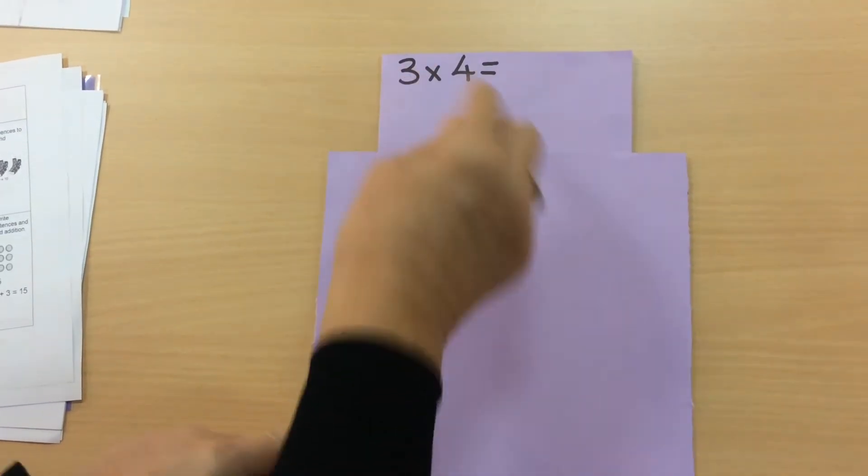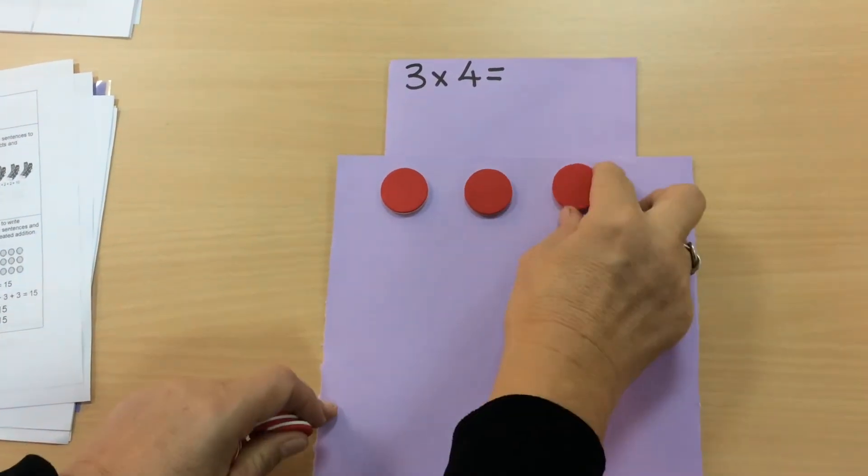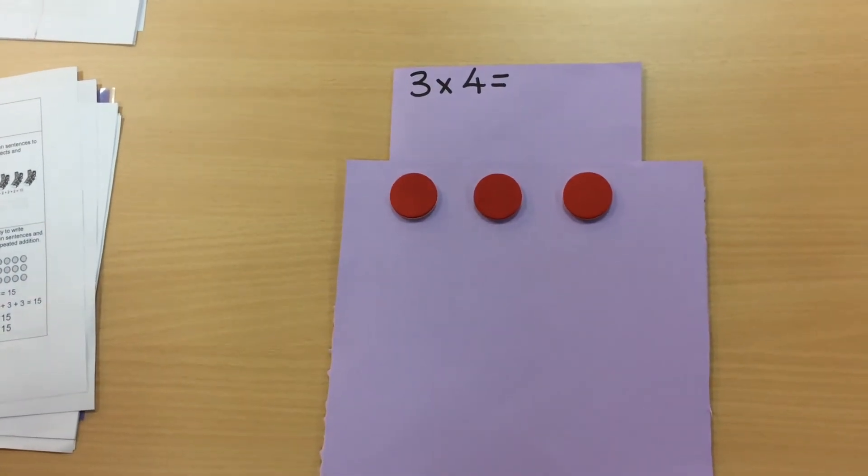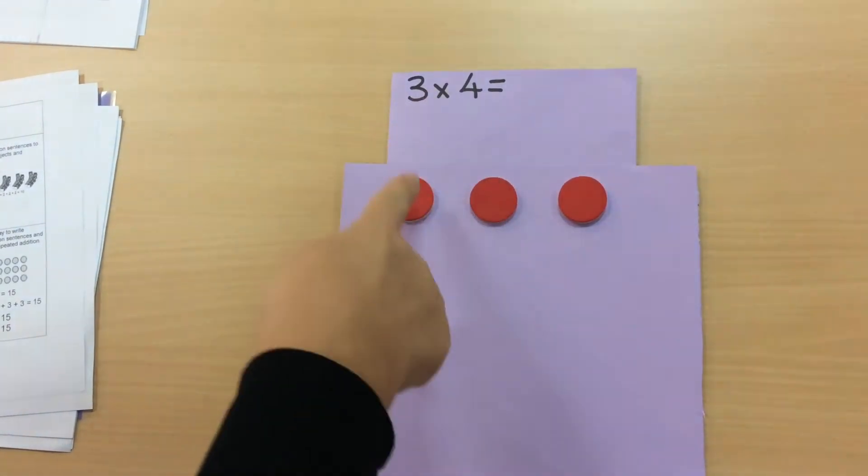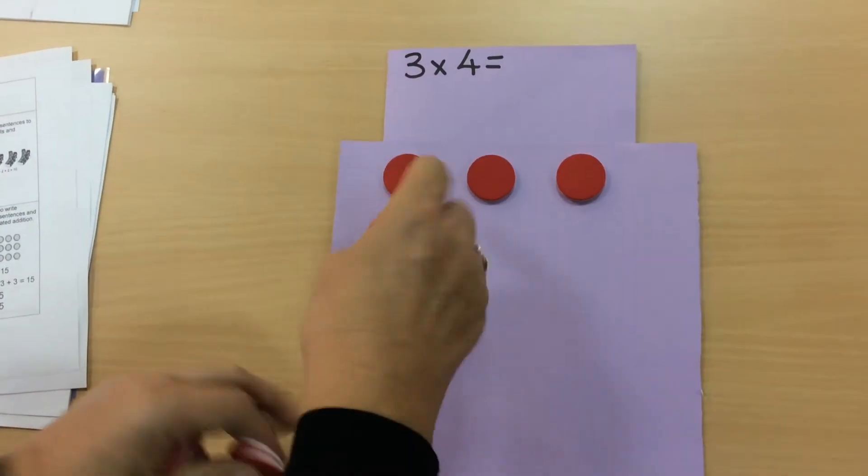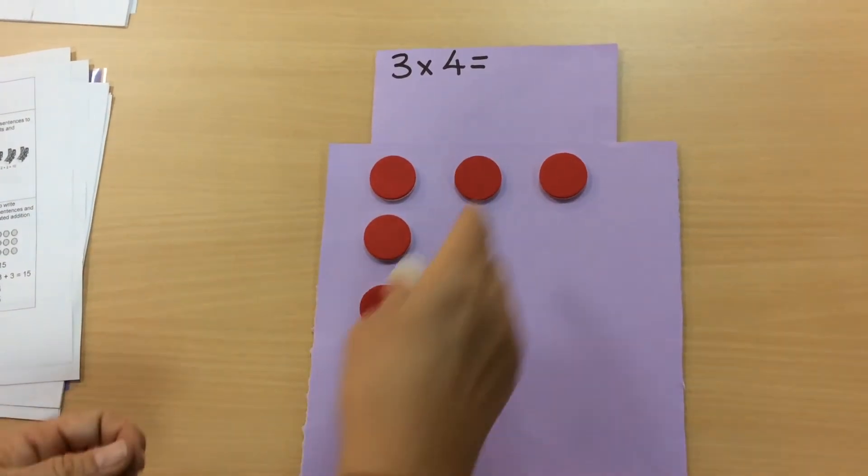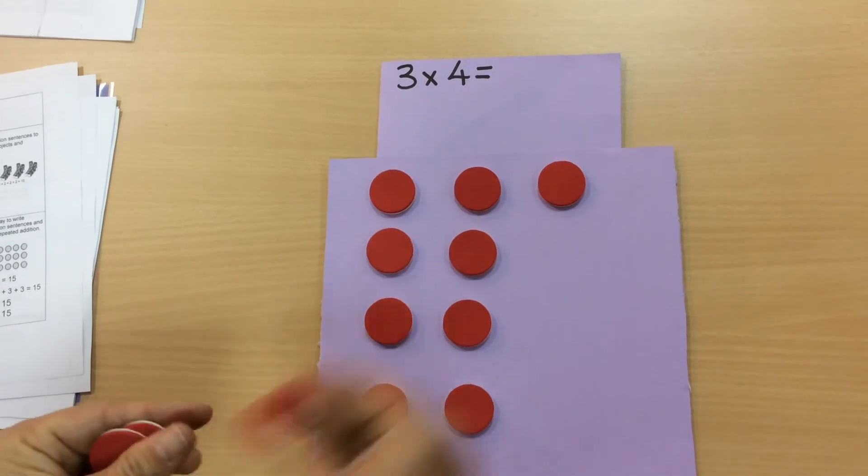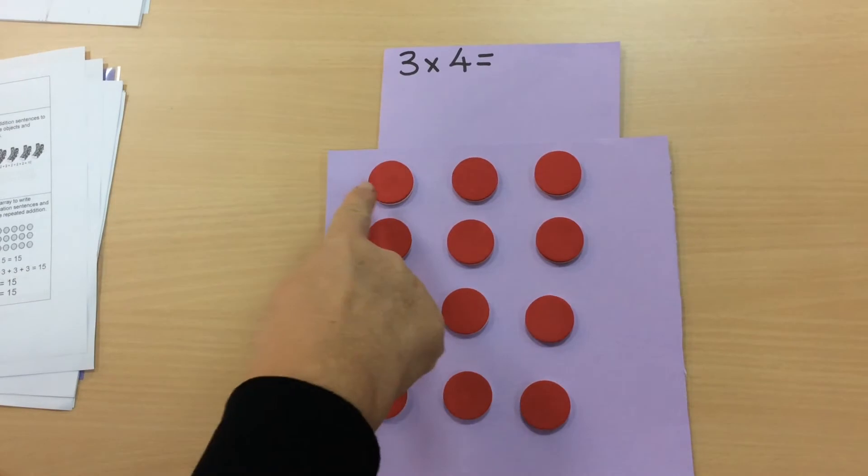We need three to start with, so we'll have three going across. It's important when it's in an array that it's in lines and columns to help children see it and count carefully. So three across, which means we need four coming down: one, two, three, four; one, two, three, four; one, two, three, four.